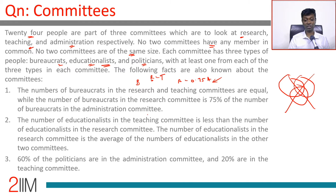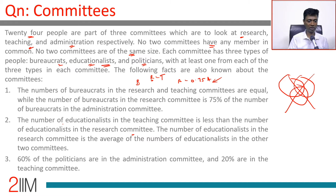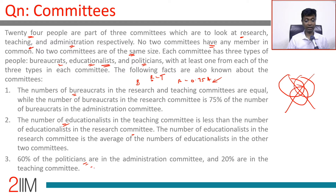The number of educationalists in the teaching committee is less than the number of educationalists in the research committee. And the number of educationalists in the research committee is the average of the number of educationalists in the other two committees. 60% of the politicians are in the administration committee, 20% are in the teaching committee, and the remaining 20% should be in research.